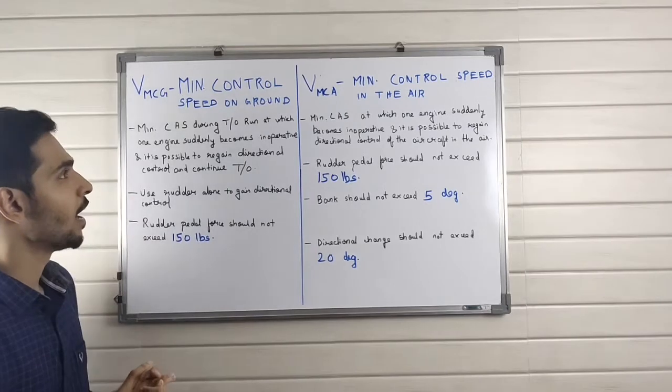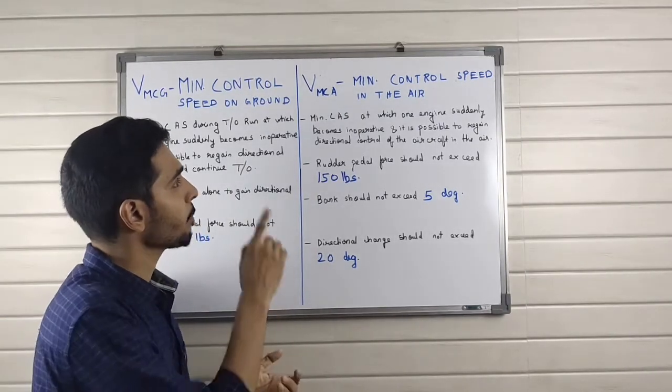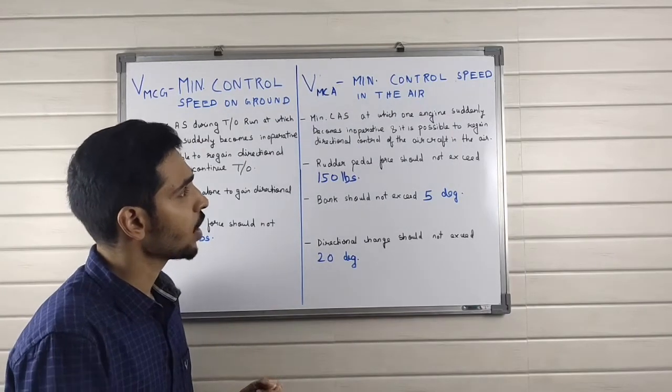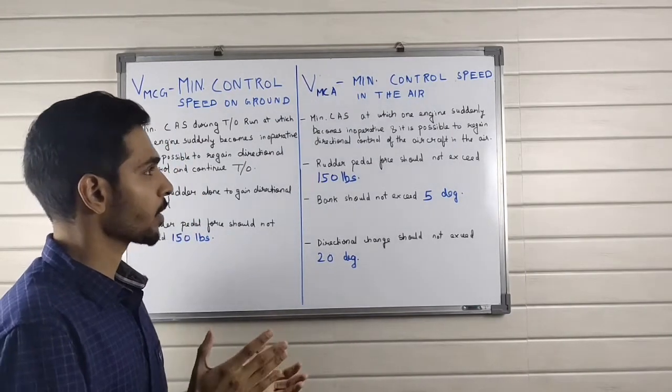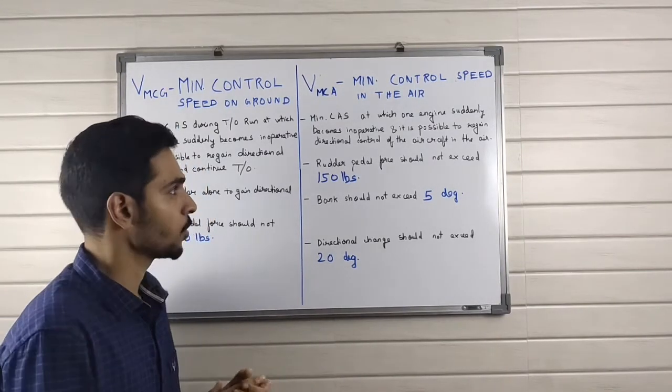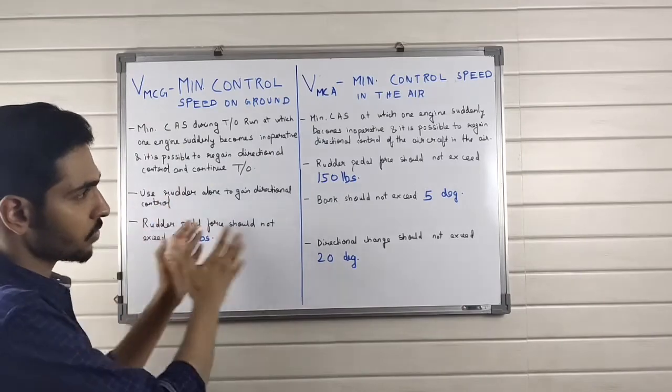Next is VMCA, the minimum calibrated airspeed at which one engine suddenly becomes inoperative and it is possible to regain directional control of the aircraft in the air. So this is on the ground; this is in the air.